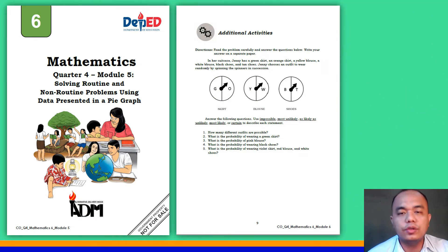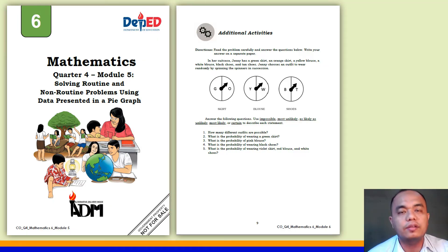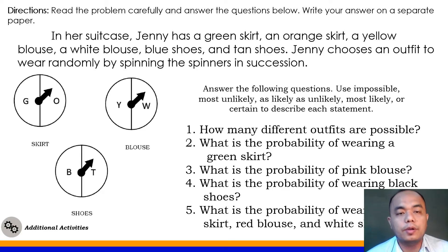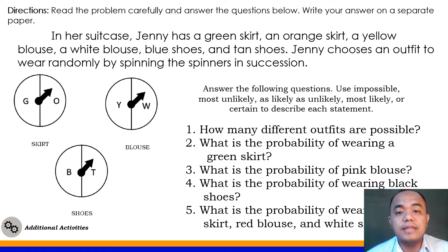Now let's proceed to your additional activities. Directions: read the problem carefully and answer the questions below. Write your answer on a separate paper. Here's the situation: in her suitcase, Jenny has a green skirt, an orange skirt, a yellow blouse, a white blouse, blue shoes, and tan shoes. Jenny chooses an outfit to wear randomly by spinning the spinners in succession.